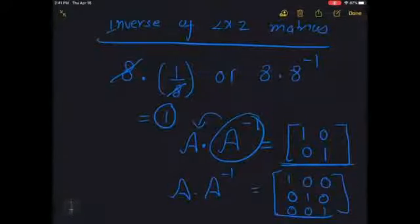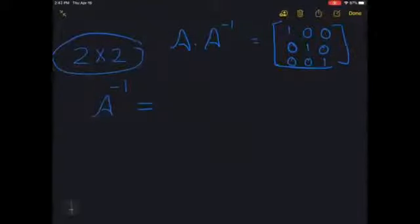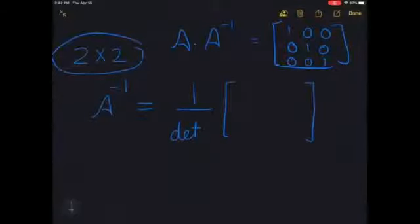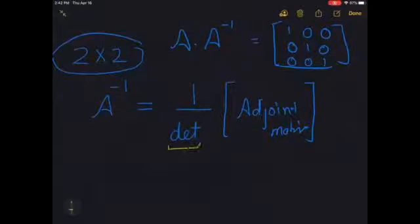Let's start the actual inverse process. How do we find the inverse? The symbol is A to the negative one. For 2×2 matrices, the formula is: inverse equals one over the determinant, times the adjoint matrix. You can see this equation on the third page of your notes. We already know what the determinant means and how to find it. So now let's talk about how to find the adjoint matrix.